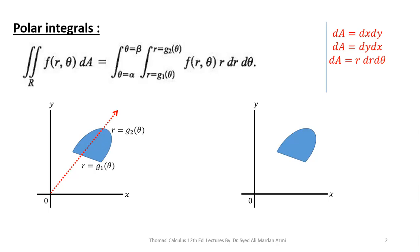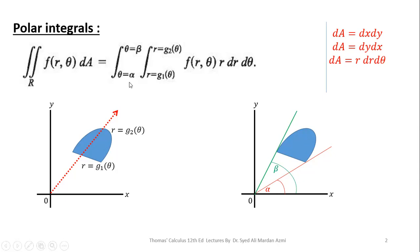Next, in order to calculate limits of theta: have a look that your region starts at this point in the counterclockwise direction, so I have taken this angle alpha, and your region ends at this point, so the angle of this point is taken as beta. The limits of theta are alpha to beta, meaning starting angle and ending angle in the counterclockwise direction.